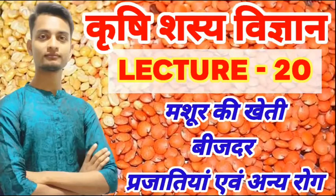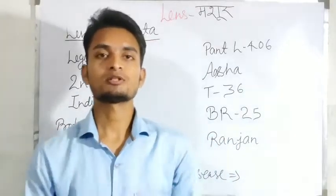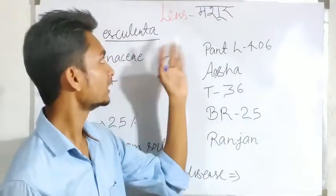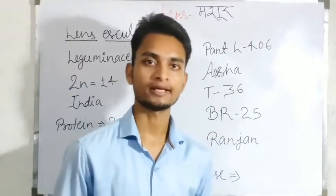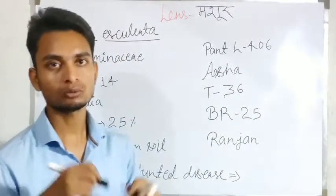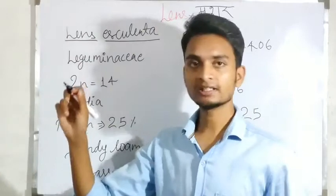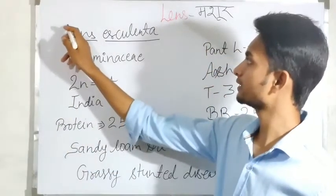Subscribe now and press the bell icon to never miss an update. Hello guys, today we are going to learn about lens cultivation — i.e., Masur. Its scientific name is Lens esculenta.